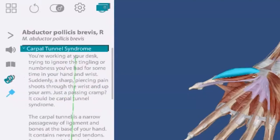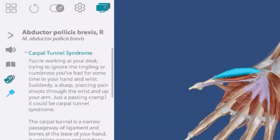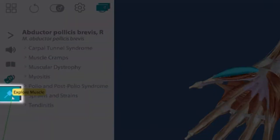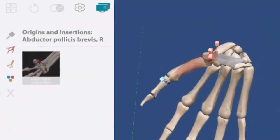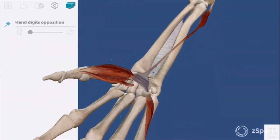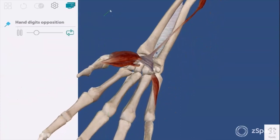I can then click on carpal tunnel syndrome and get the full definition of what that ailment is. I can then go in and explore the muscle and do a further deeper dive by opening up the flexion model within the hand.